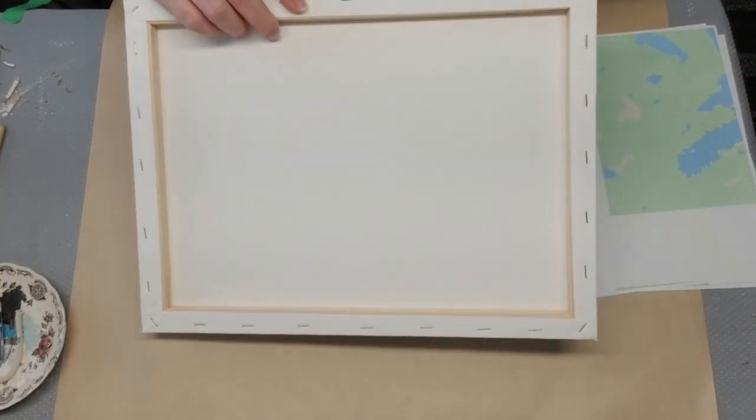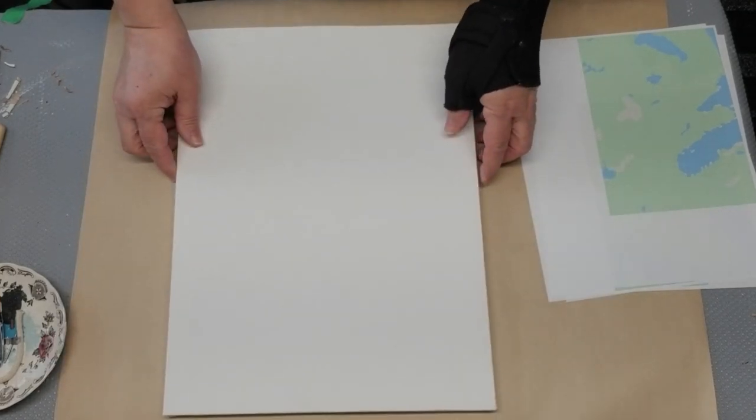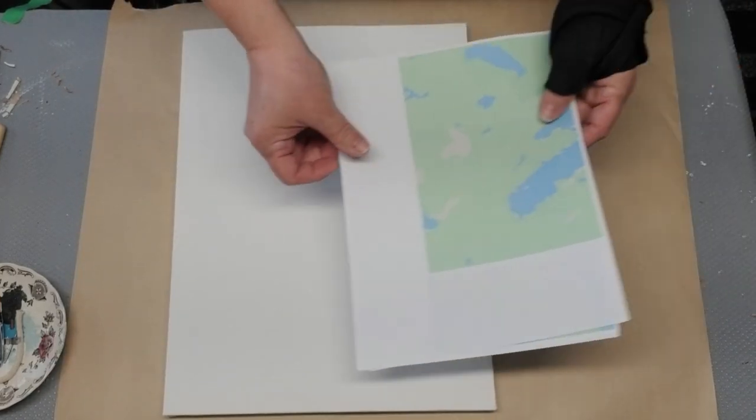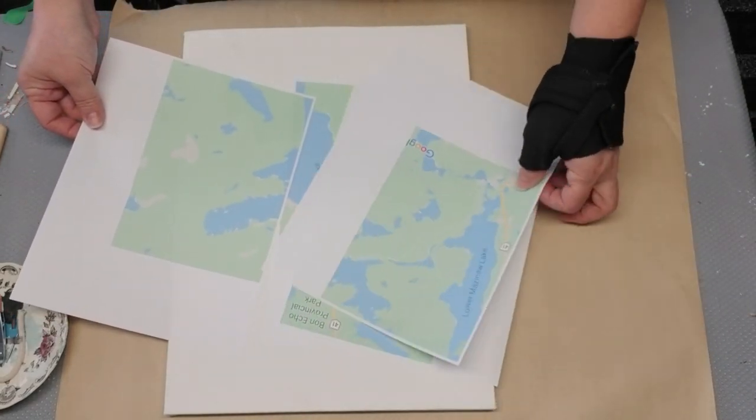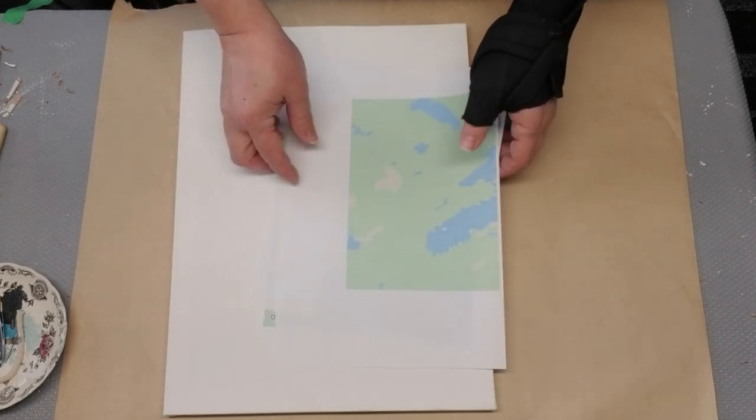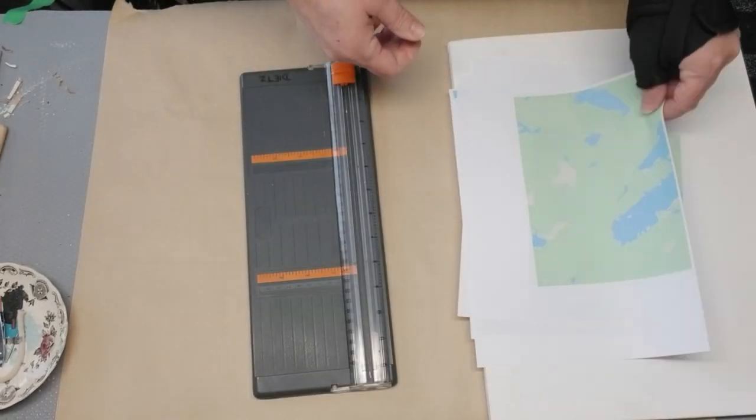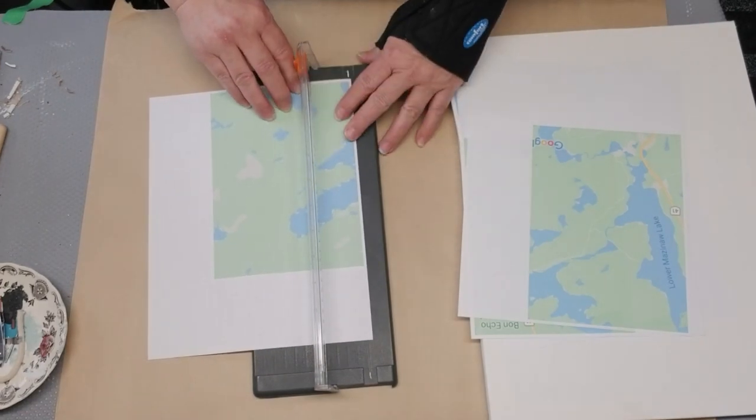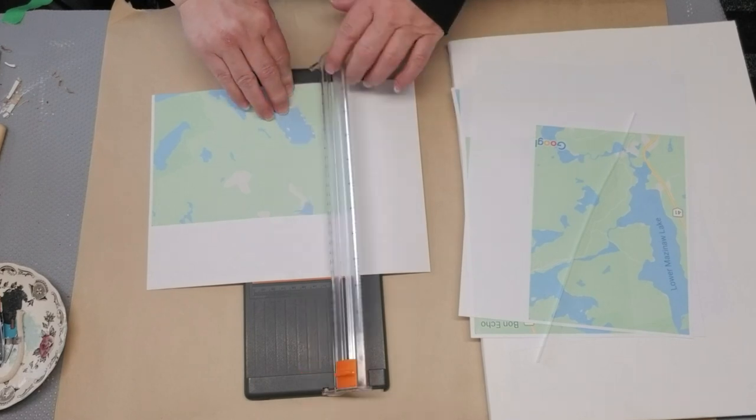For this first project I'm using a 12 by 16 canvas that I picked up at Dollarama. It's been in my stash for a while and I printed off a map of the lake where our cottage is. It printed off in four different pieces because I needed the large size, but that's okay. I'm just going to cut down those squares and fit them on top of the canvas.